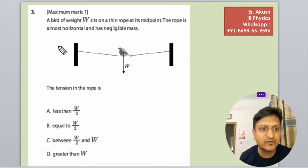We have another question to do. The question says a bird of weight W sits on a thin rope at its midpoint. The rope is almost horizontal and has negligible mass.